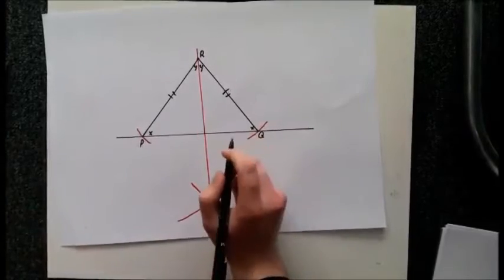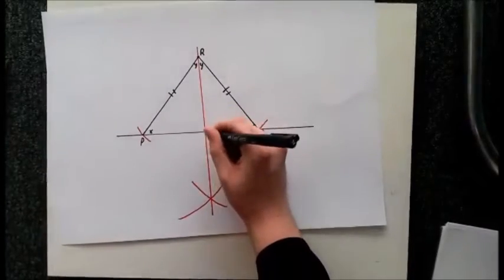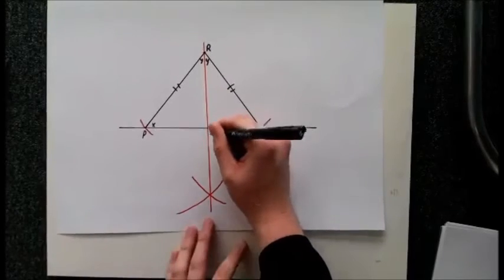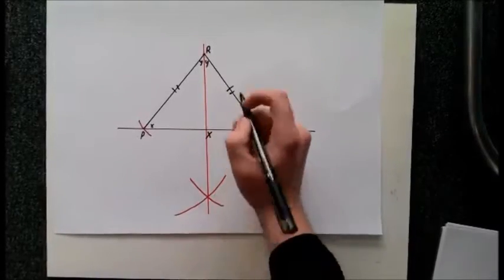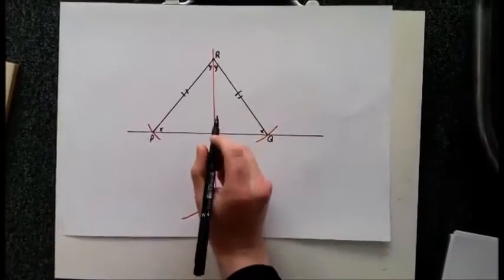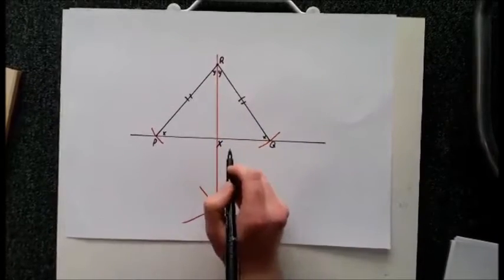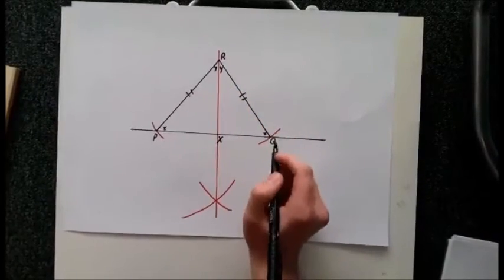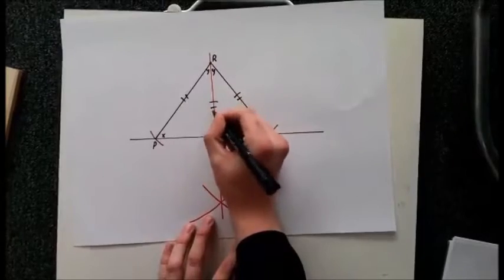I will name the center point where the intersection is on the baseline. The line RX is common to both triangles RPX and RQX, so that line is equal to both.